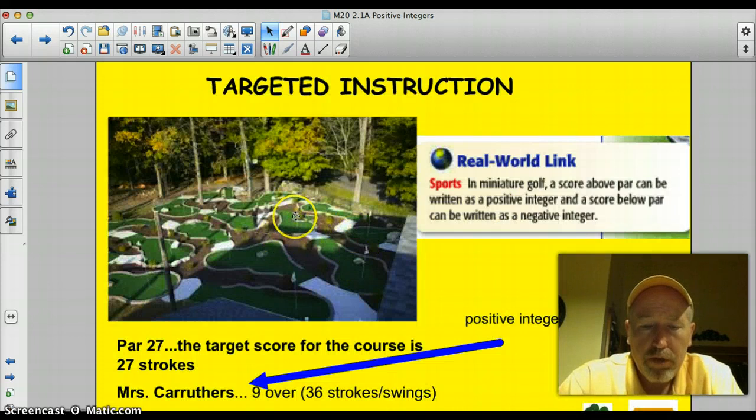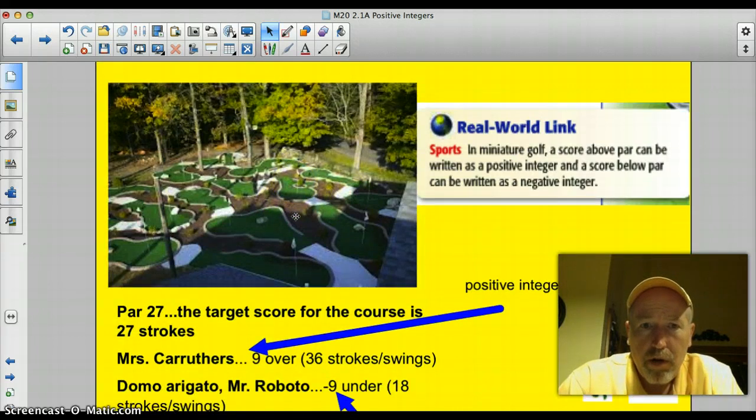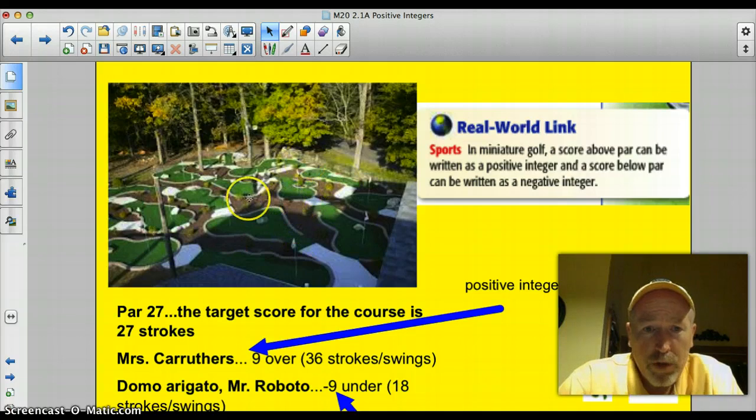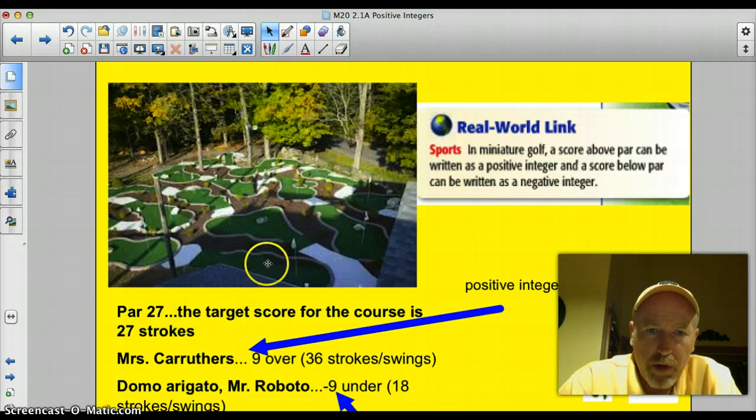There are positive and negative integers that we need to understand. When you play putt-putt on this course right here, par is 27. That's the target score for a good round of golf, basically three shots per hole.